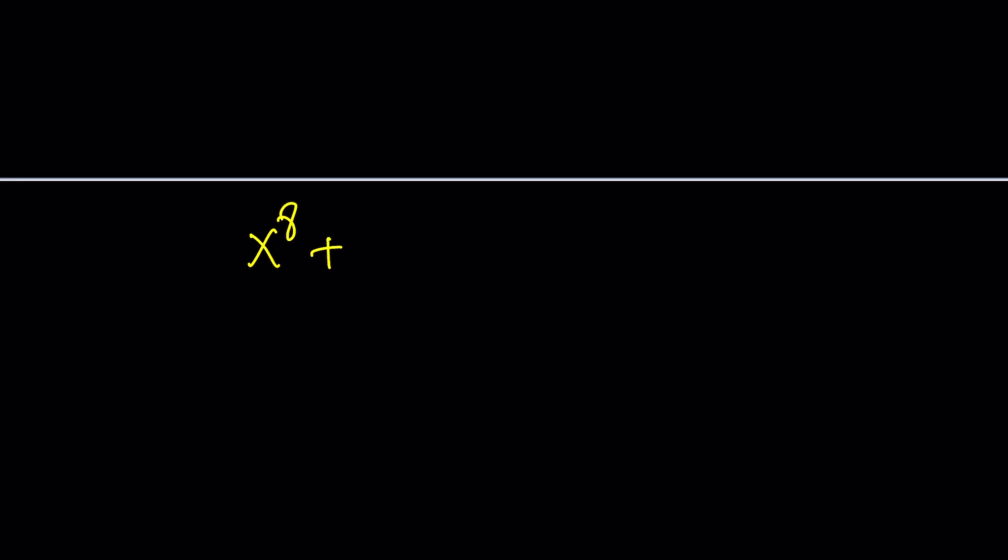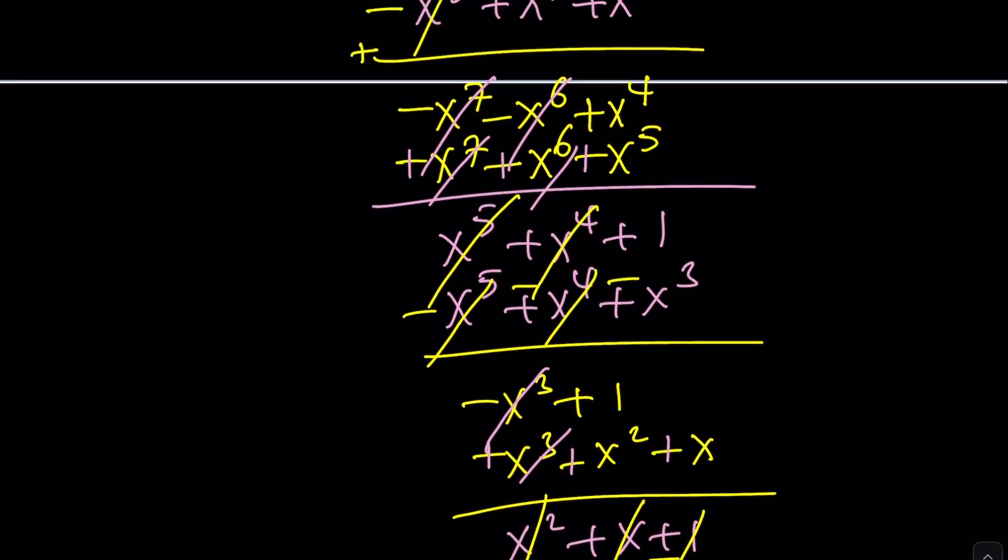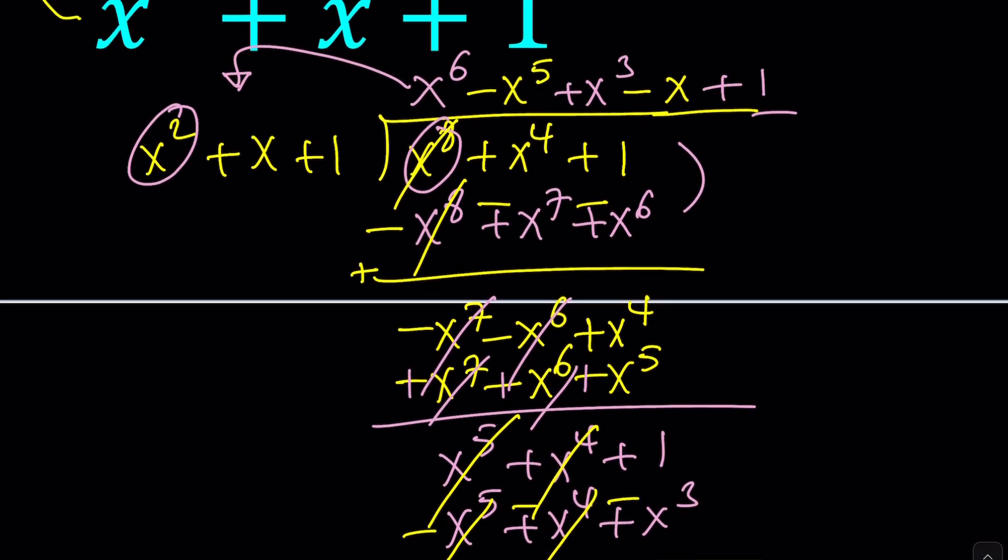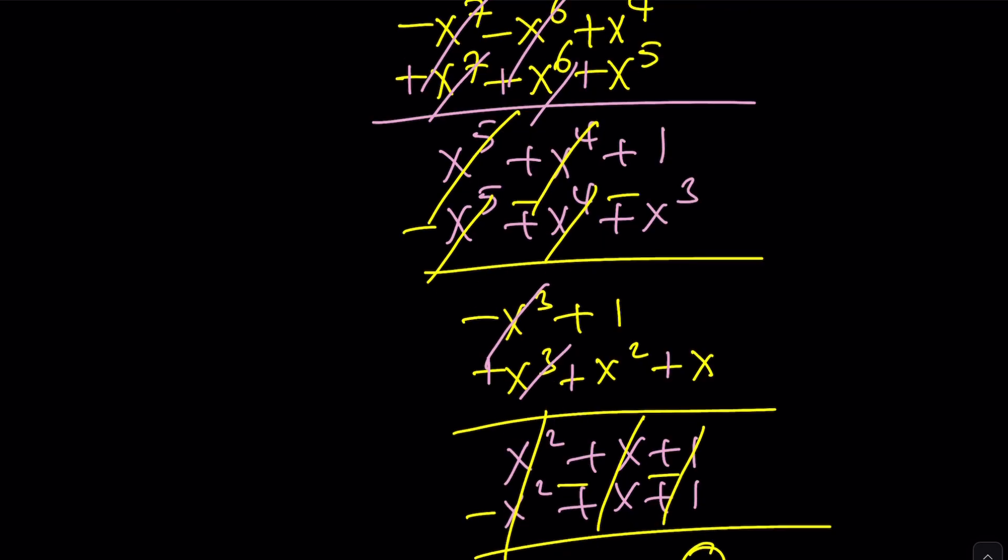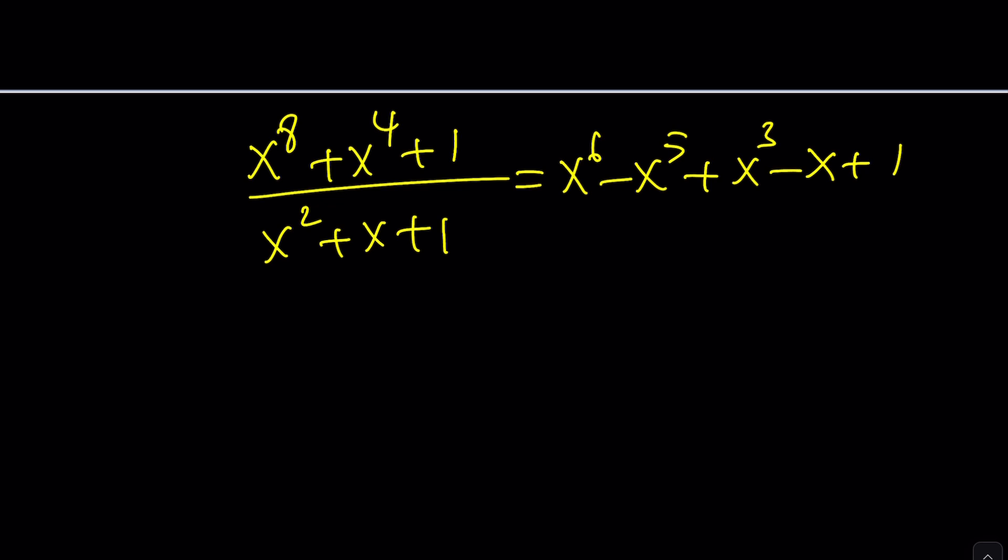Of course, we need to write the result in a meaningful way. We had x to the 8th plus x to the 4th plus 1 divided by x squared plus x plus 1. And the result is x to the 6th minus x to the 5th plus x cubed minus x plus 1. So that should be the answer. And as you can see here, there's no remainder. There shouldn't be. Because that's how the problem is designed. So that it's evenly divisible. Yes, this is a long process. And I know some people don't like it. I don't like it either. And I can't blame you for that.